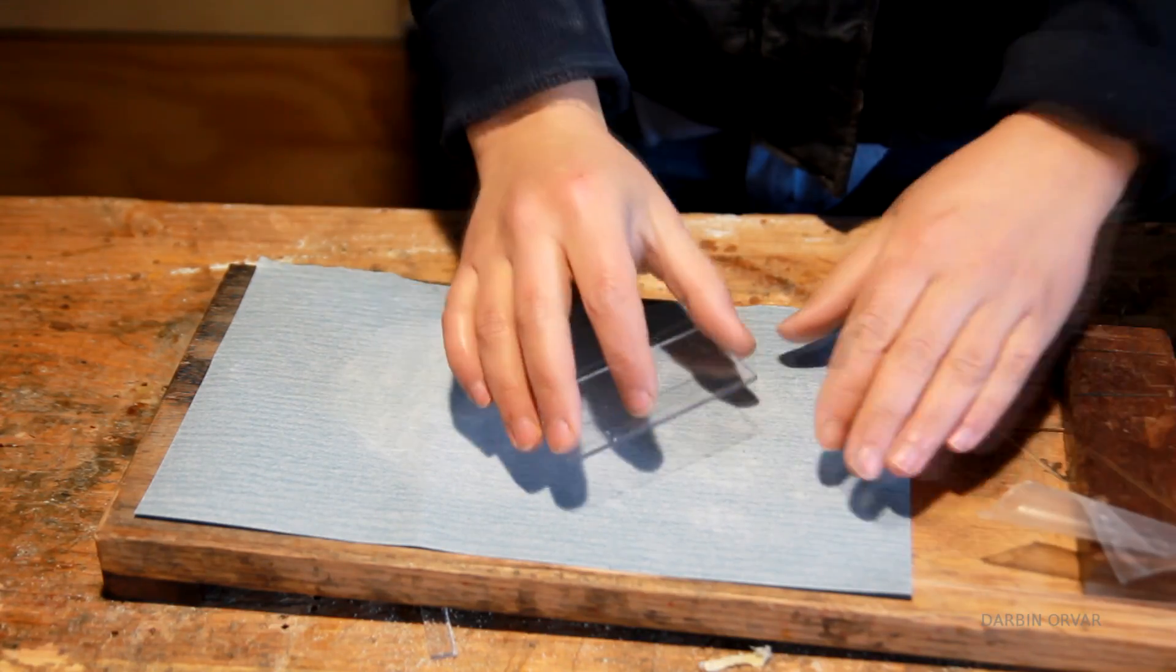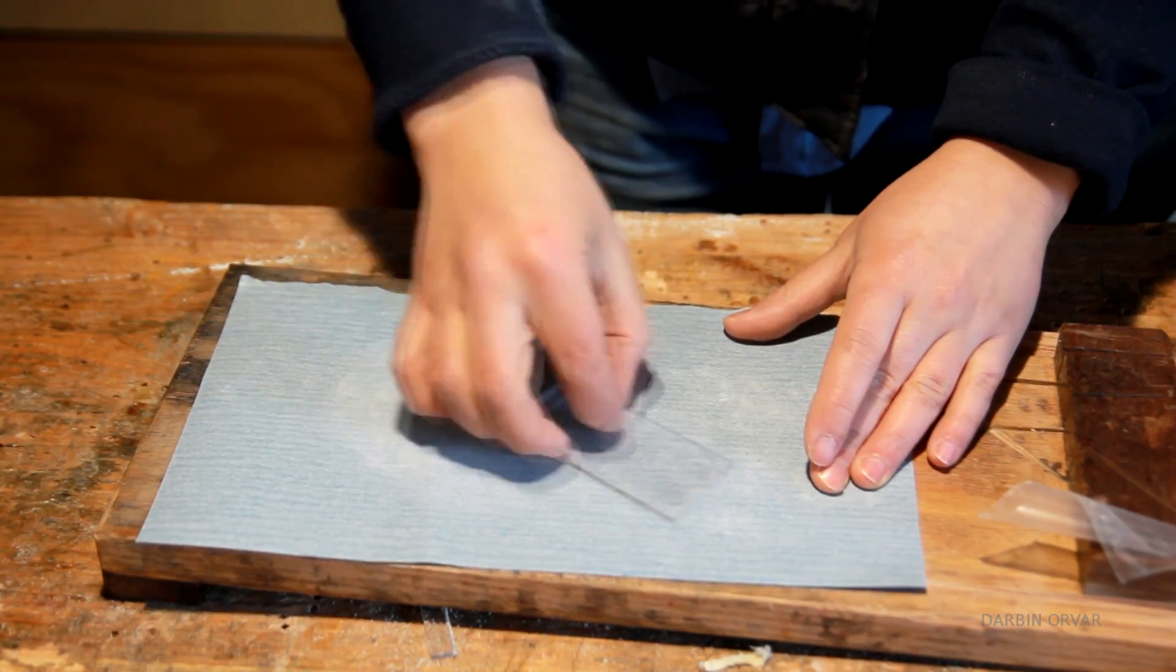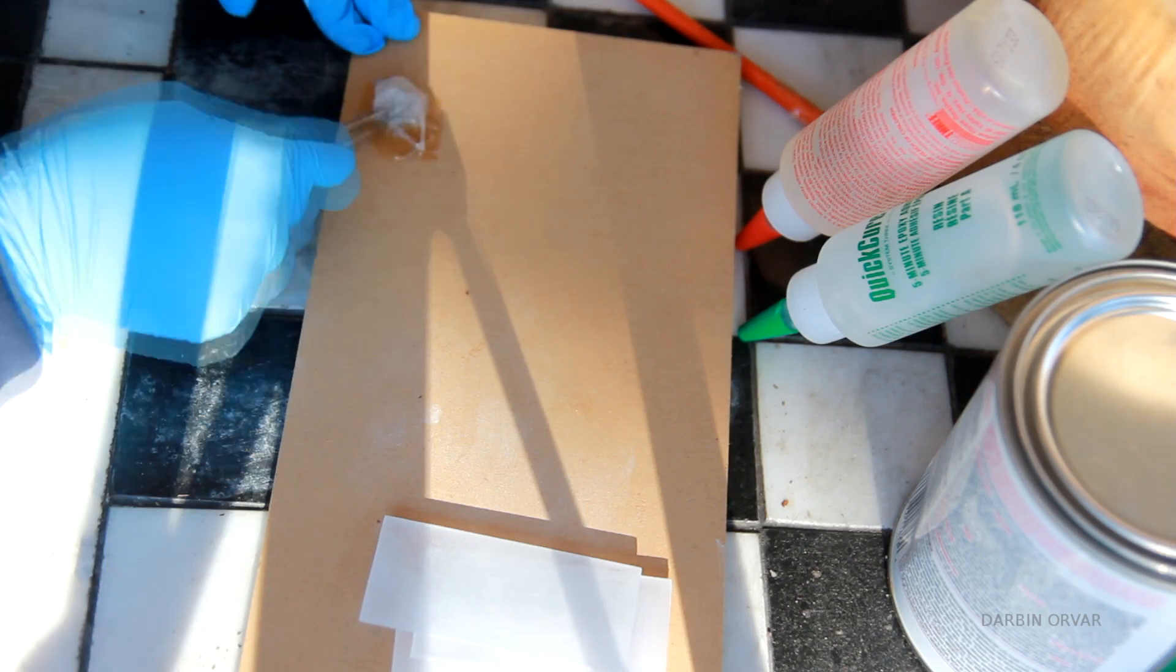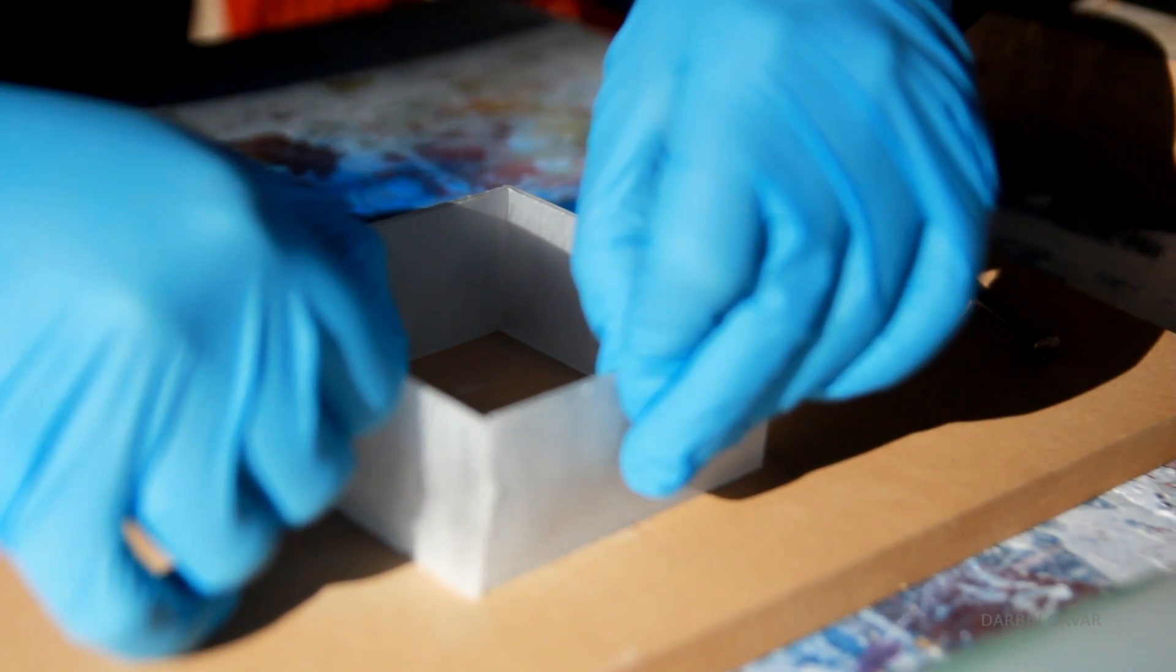To frost the glass, I sanded the pieces with fine sandpaper. But you could also spray with frosted spray paint. Then I mixed up some epoxy and glued the sides together to form a square.